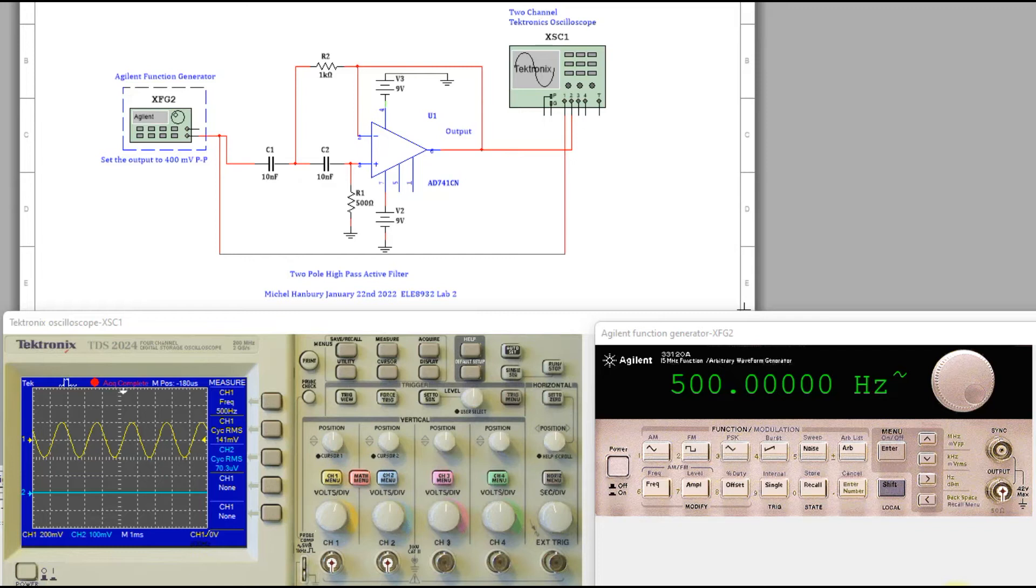You can use the Agilent function generator. I'd say the Tektronix is the best. Let's show you how to make some changes on the scope here.